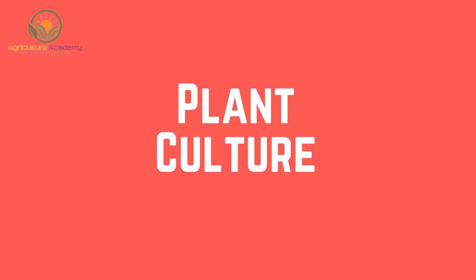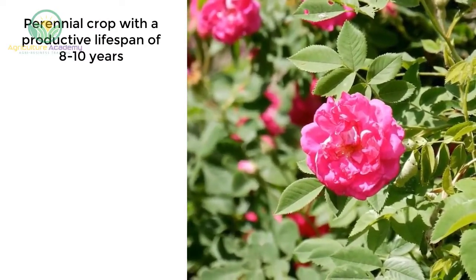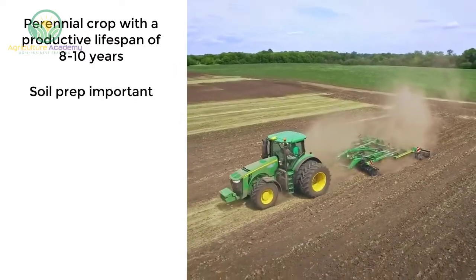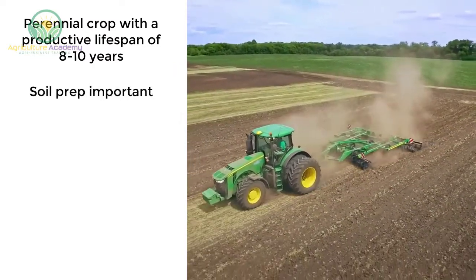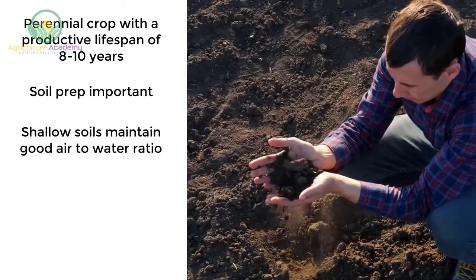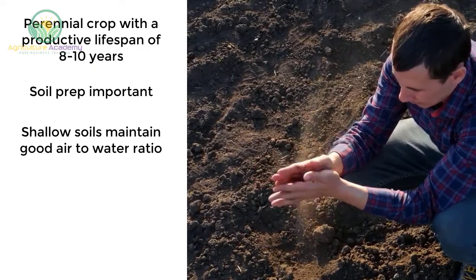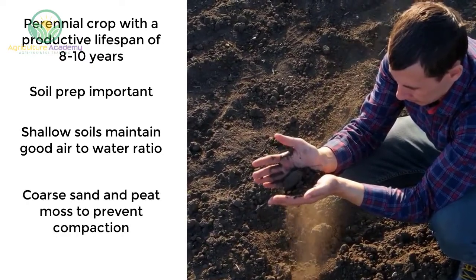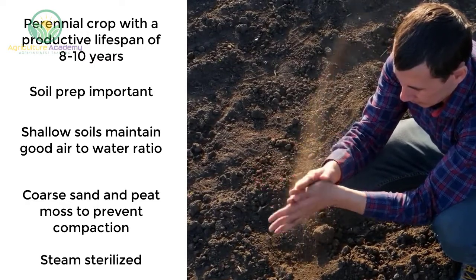Plant Culture. The rose is a perennial crop with a productive lifespan of 8 to 10 years. Soil preparation is extremely important so that the grower can begin with healthy, productive soils. Shallow soils are required to maintain a good water-to-oxygen balance. Coarse sand and peat moss can be used to prevent compaction. The soils can also be steam-sterilized.